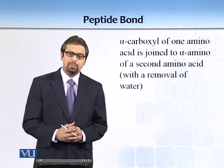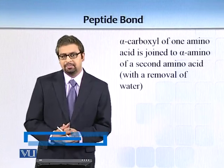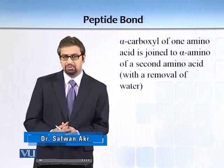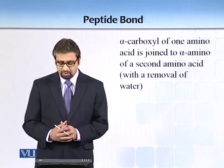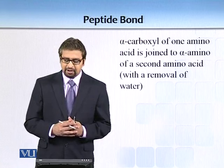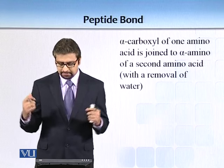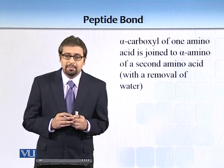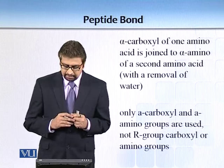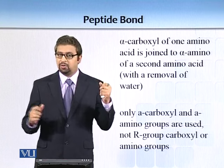We have seen how peptide bonds are formed when one transfer RNA gives it to another transfer RNA, and ultimately in ribosomes peptide bonds are being formed. Let's look at a peptide bond in greater detail. The alpha carboxyl of one amino acid is joined to the alpha amino of a second amino acid with the removal of water. It is important to clarify that it is between the alpha amino and alpha carboxyl groups.